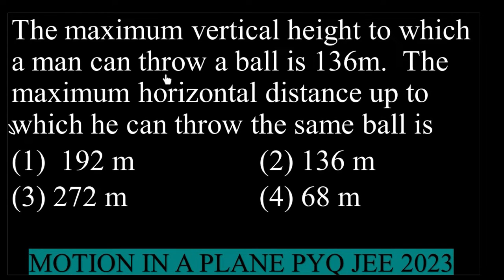The maximum vertical height to which a man can throw a ball is 136m. The maximum horizontal distance up to which he can throw the same ball is... Those students who know the formula have got the answer now.